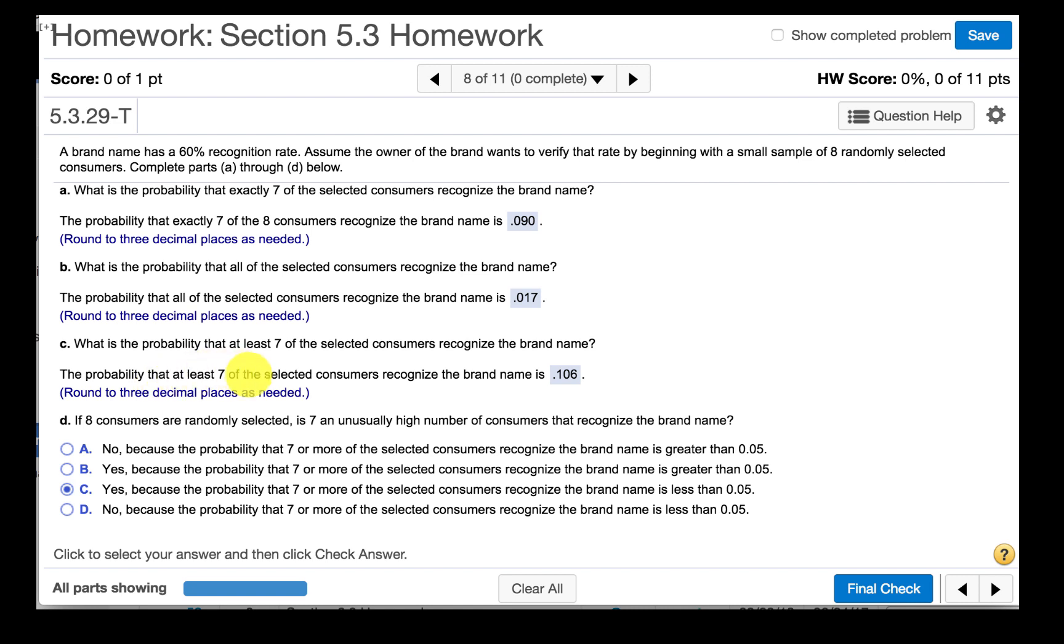The probability that at least 7 of the selected consumers would recognize the brand name is 0.106. This is greater than 0.05. So we would say no, because the probability that 7 or more of the selected consumers recognize the brand name is greater than 0.05.